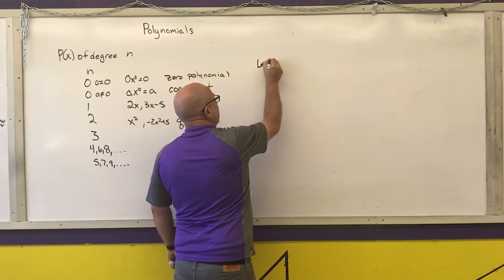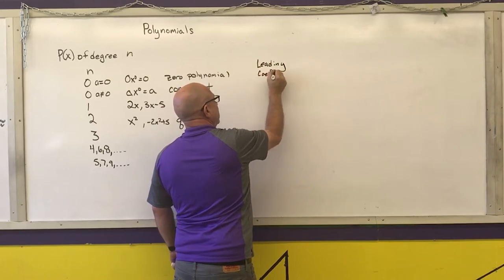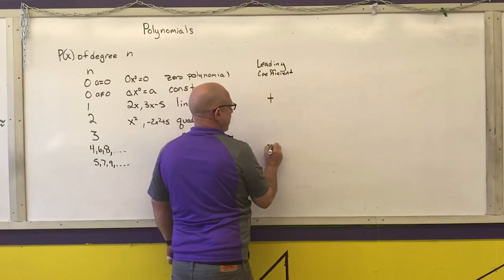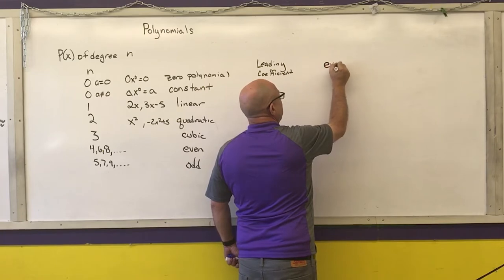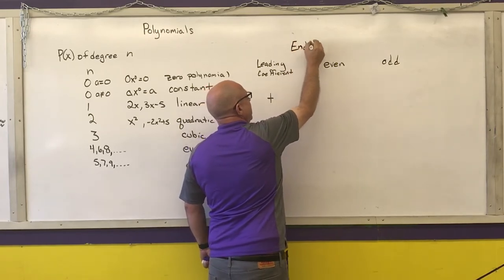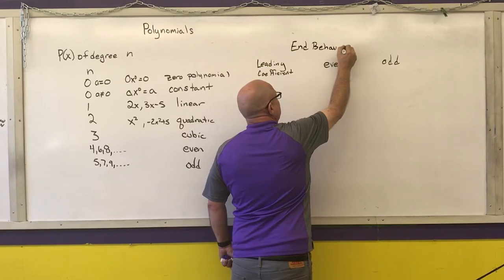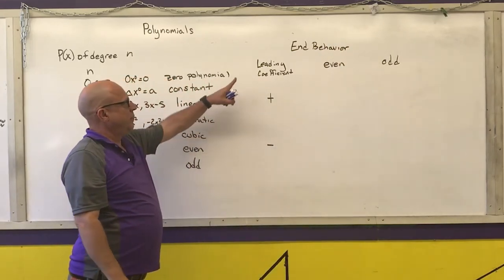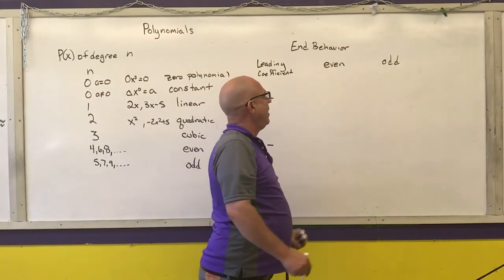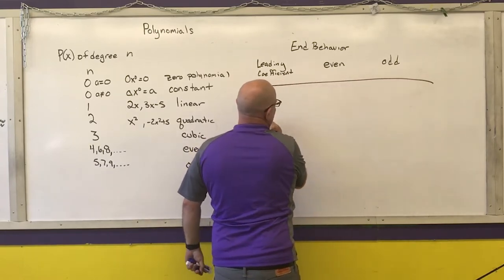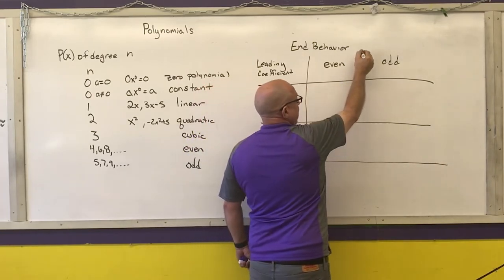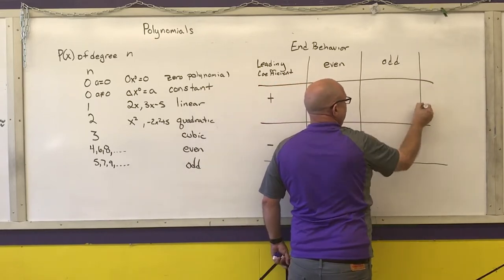Now I'll describe the end behavior of a polynomial function based on its leading coefficient — positive or negative — and whether it has an even or odd degree. End behavior describes what the graph looks like when X is very small (approaching negative infinity) or very large (approaching positive infinity).